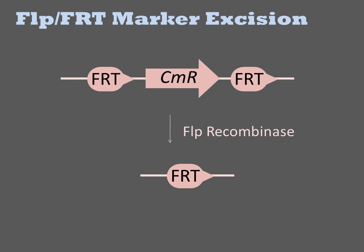There are various ways to make this process markerless. One common strategy is to flox the selectable marker. A DNA is constructed with FRT sites in a parallel orientation flanking an antibiotic resistance gene. This cassette is introduced into the genome, conferring chloramphenicol resistance for selection. Subsequently, FLP recombinase is introduced into the cell, resulting in excision of the marker, leaving behind only a single FRT site.